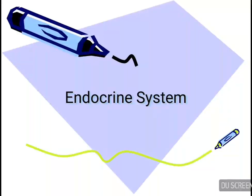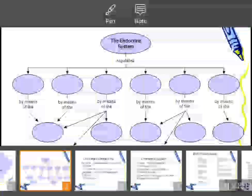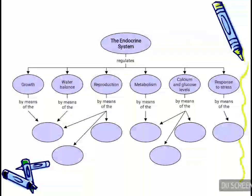Hello everyone, today we are going to talk about the endocrine system — the system of chemical coordination in our body. The endocrine system basically regulates growth, water balance, reproduction, metabolism, calcium and glucose levels, and response to stress.